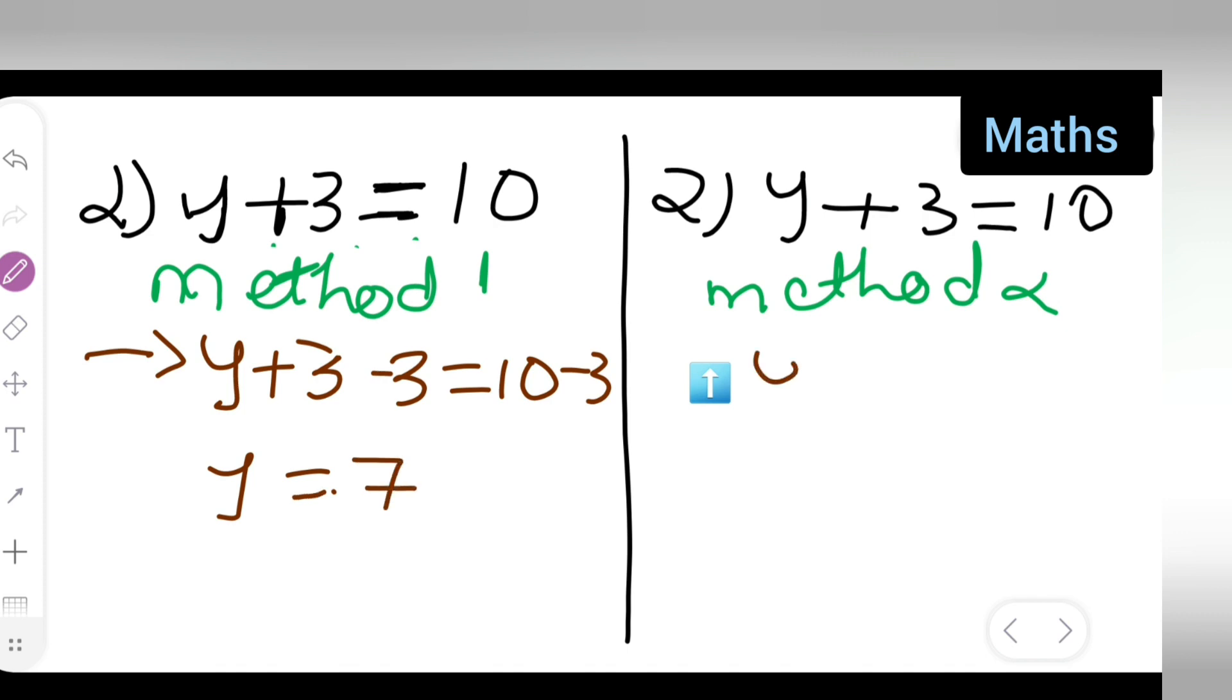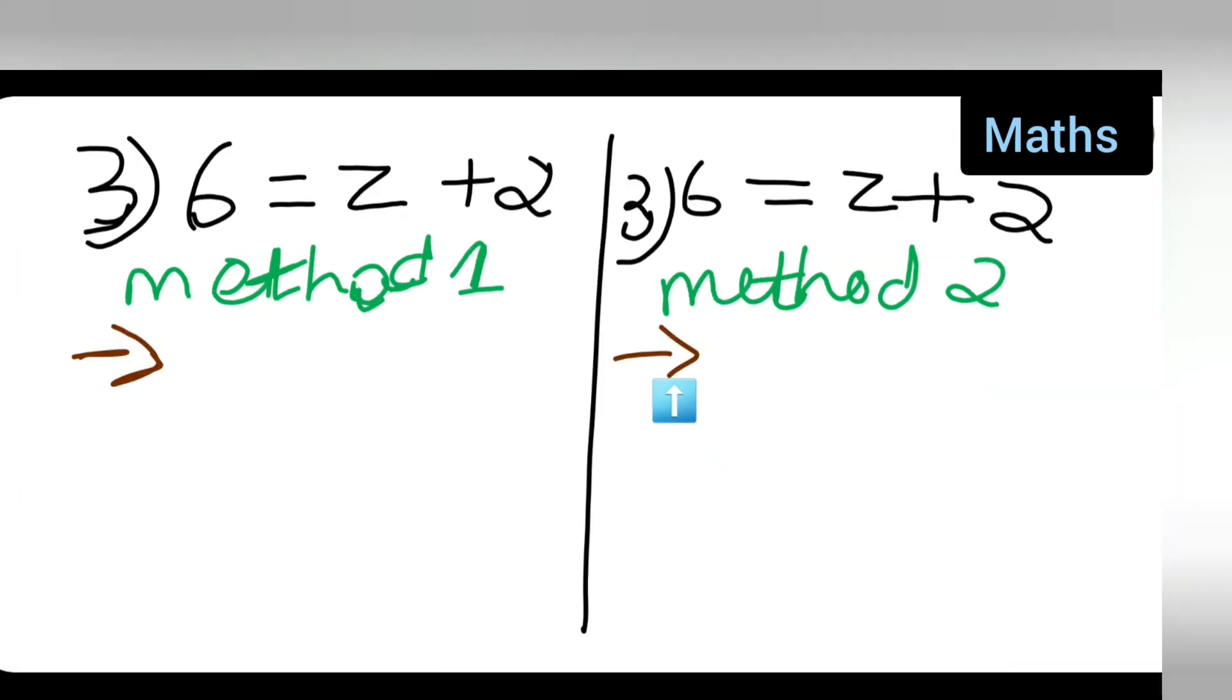So, same way you all can try it over here. So, Y plus 3 is equal to 10 is given to you. Alright. So, it will be Y is equal to 10 minus 3. Because this positive 3. When it goes other side. It will become negative. So, 10 minus 3 will give you 7. Next. Moving towards the next.